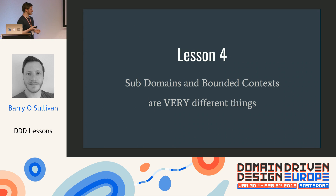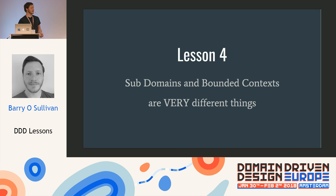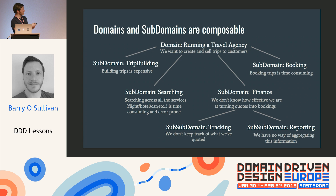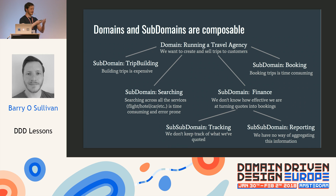Lesson four, and this one I got very wrong at the start: subdomains and bounded contexts are very different things. At the beginning I made the leap that there's always a one-to-one mapping and they are very similar to each other, but realistically they're completely different. Domains and subdomains are composable — when I look at a domain, I'm really looking at a problem space and each problem will break down. A previous company I worked with was developing software for travel agents, and in order to run a successful travel agency you need to build trips, search, book things, and understand finance. These break down into sub-problems and you can go down infinitely — they're composable in a tree. It's a useful way to explain the different systems to people.